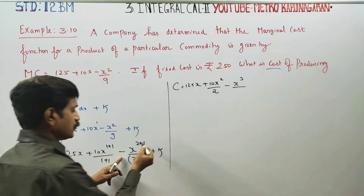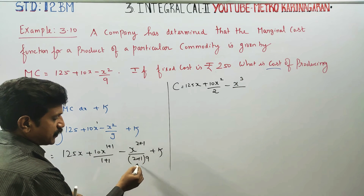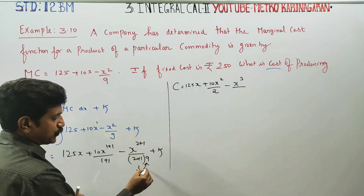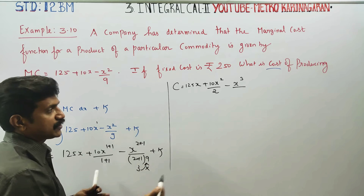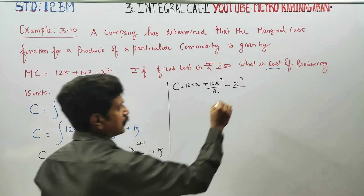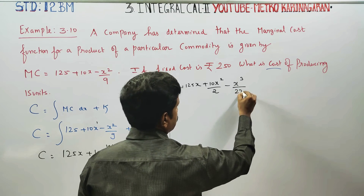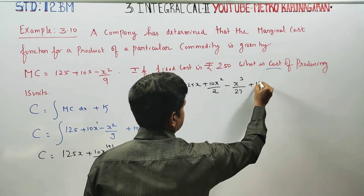Here the power 2 plus 1 gives 3, and 3 into 9 gives 27. So the denominator becomes 27, plus K.